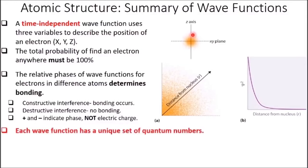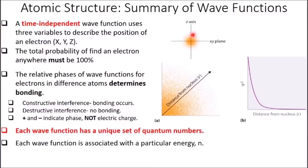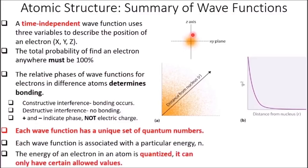Each wave function has a unique set of quantum numbers: n, L, ML, and MS — four quantum numbers. Each wave function is associated with a particular energy n, and that n is also associated with an average distance from the nucleus. Average distance from the nucleus and energy go hand in glove. The energy of an electron in an atom is quantized — it can only have certain allowed integer values.